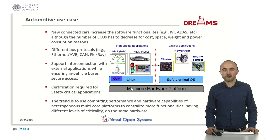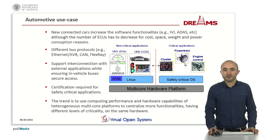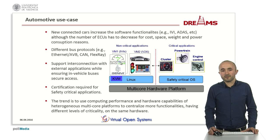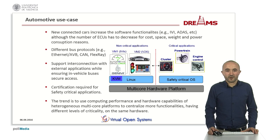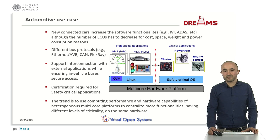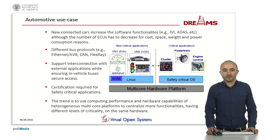If we apply this concept in an automotive use case, the goal is to isolate vehicle control — for example, the powertrain and engine control — in the safety-critical OS, and the connectivity part like infotainment, V2X, V2V, and V2E in the non-critical application. We need to support different bus protocols because the engine control typically uses the CAN bus and for communication we use Ethernet or MOST bus protocols. For the safety part we need to certify the safety-critical application. The idea is to use the computing performance and hardware capabilities of heterogeneous platforms to centralize more functionality with different levels of criticality on the same hardware, for cost, weight, and power consumption reasons.